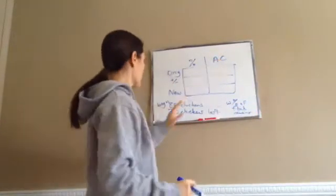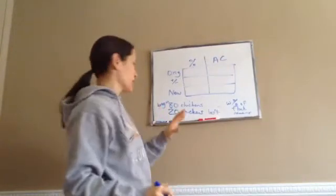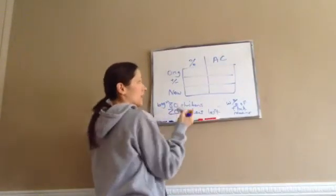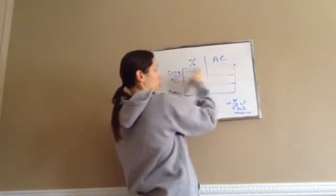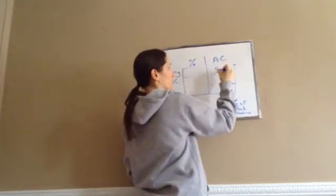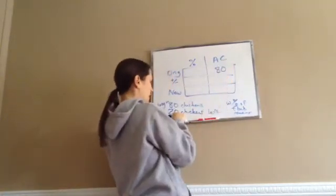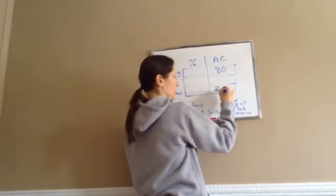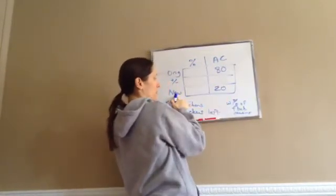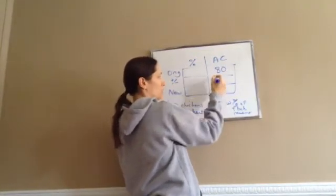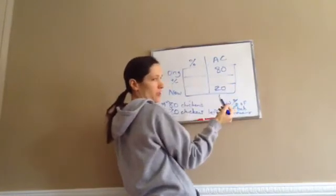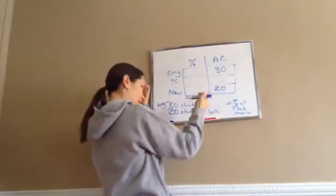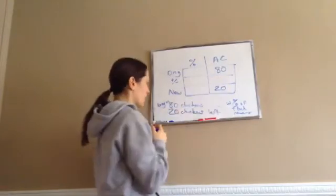Let's look at actual count because we know we have 80 and 20 chickens. So we begin with 80 chickens. That would be the original. The original actual count, we have 80 chickens. And then we ended with 20 chickens. That's the new. Now, how much did it go up or down? You don't have to fill this in because it's not going to be important. But you can. We can put 60 there. And it went down 60.